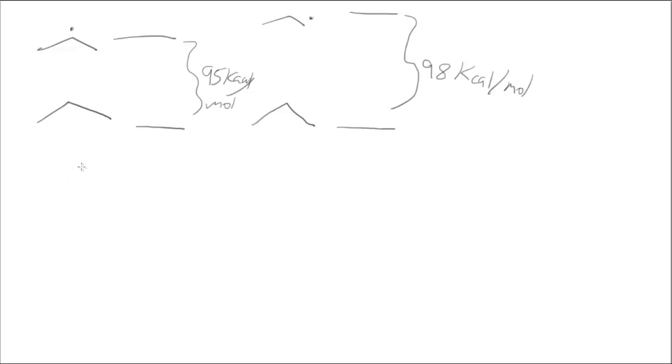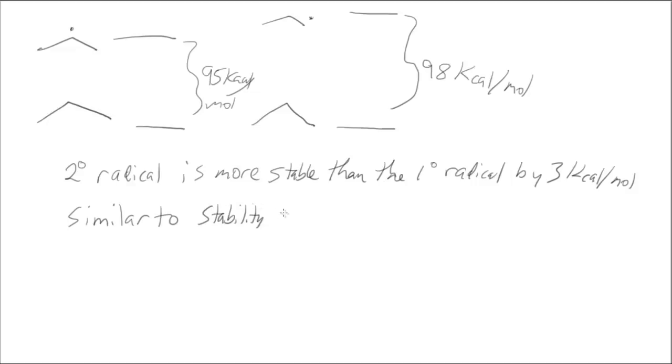So what does that tell us? It tells us that the secondary radical is more stable than the primary radical by 3 kcals per mole. What we end up seeing in radicals is the same thing that we see in carbocations, and that is that tertiary is more stable than secondary, is more stable than primary, is more stable than methyl.